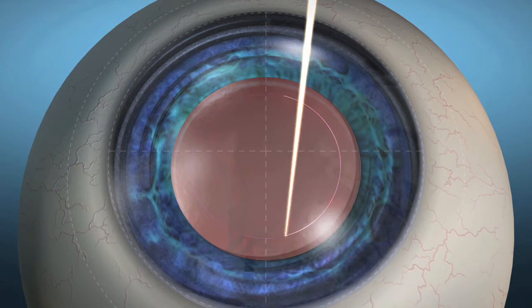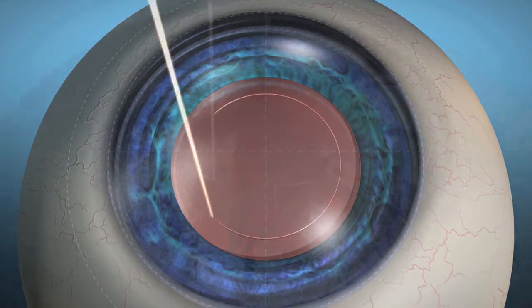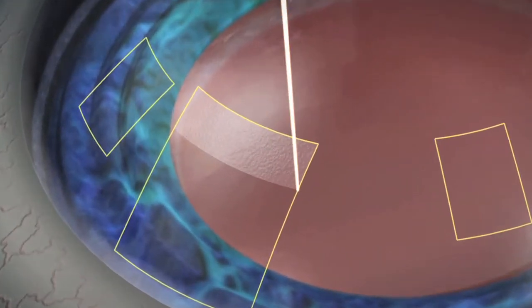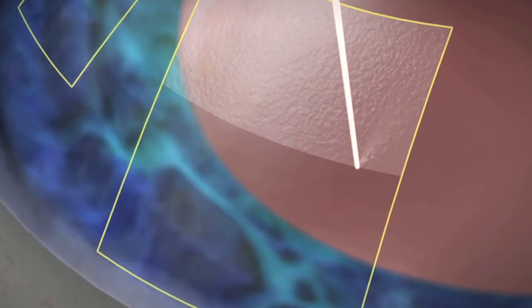The LensX laser system uses tightly focused laser pulses to separate tissue and create incisions through a process called photodisruption. Photodisruption is the fragmenting of tissue using light energy.